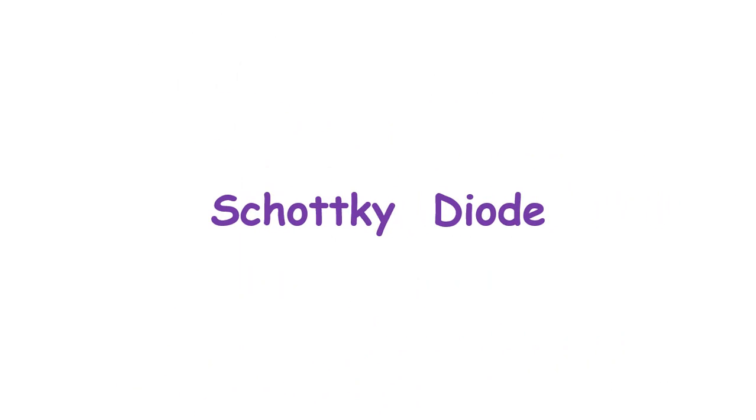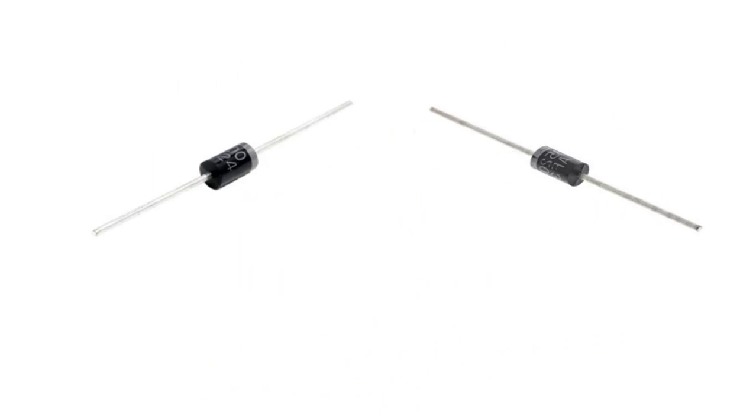Schottky diode. These diodes have lower forward voltage drop compared to ordinary silicon PN junction diodes. In other words, while the voltage required for a normal silicon diode to pass current is about 0.7, this value is somewhere between 0.15 and 0.4 volts in these diodes.